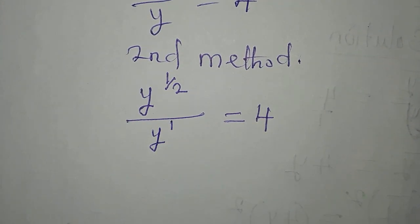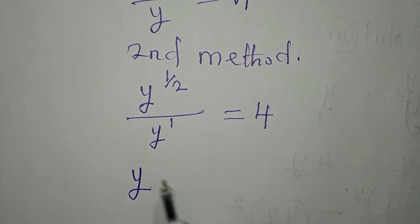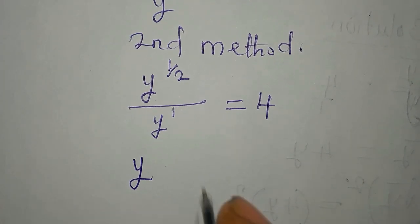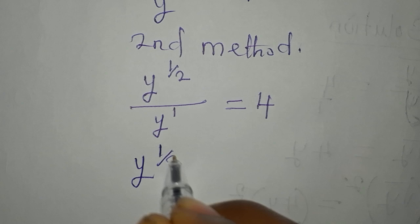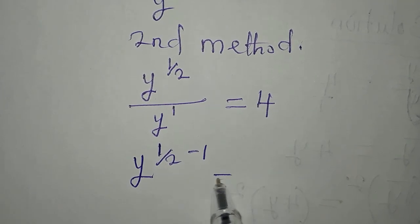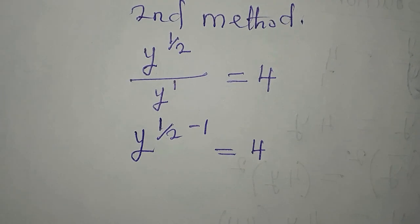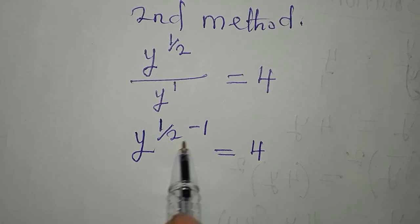This is to the power of 1, so if I pick one of the bases according to one of the rules of indices, I will subtract the powers, and this is equal to 4. Now what is half minus 1?